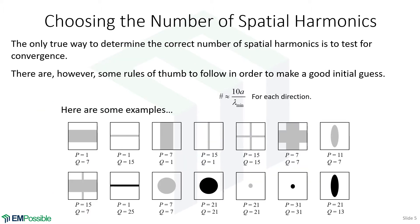A key question in implementation is: how many spatial harmonics are enough? There's no equation to tell you — the absolute answer is to check for convergence. Run a simulation, get your answer, increase the number of spatial harmonics, run it again, and keep doing that. You'll notice the answer stops changing much, even as simulations take longer. It's up to you to decide where along that curve you're converged, balancing speed and accuracy.